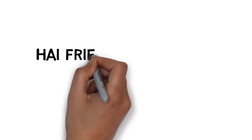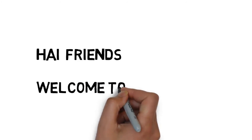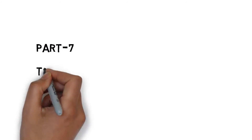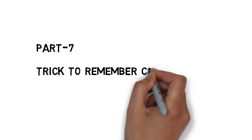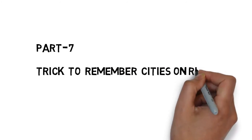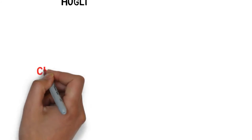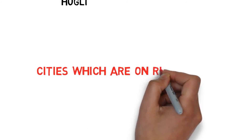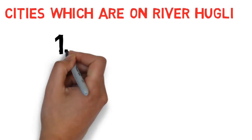Hi friends, welcome to Call for Trick. Once again I came up with a very interesting and romantic trick. Let us see the trick — Part 7: trick to remember cities which are located on River Hooghly. Let us see the cities which are located on River Hooghly.